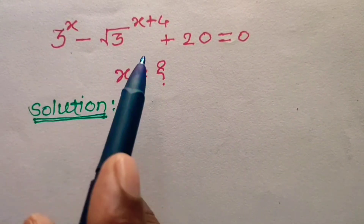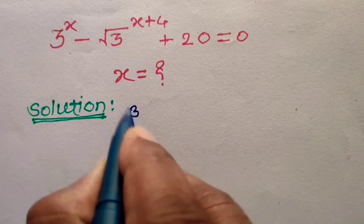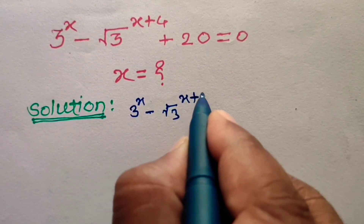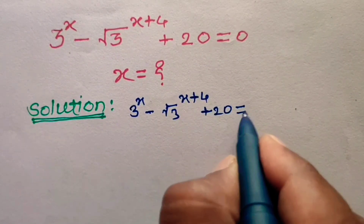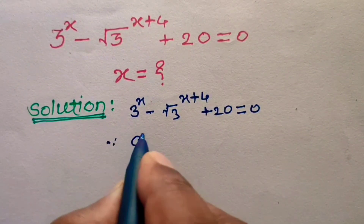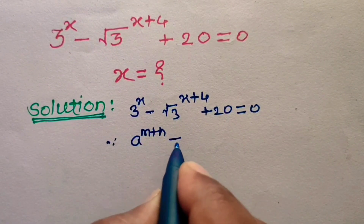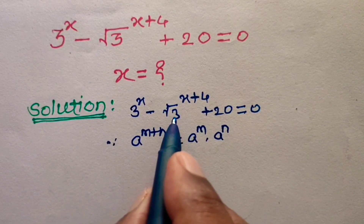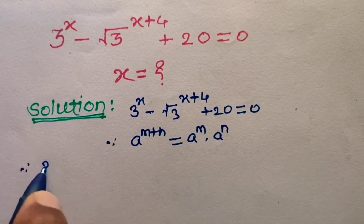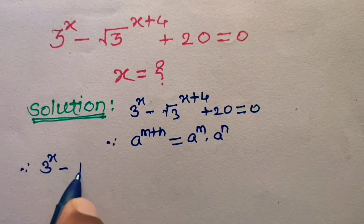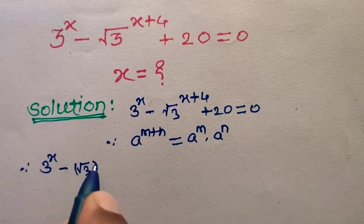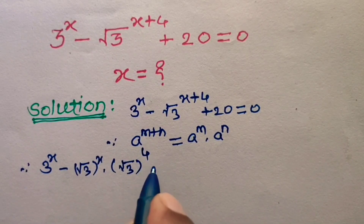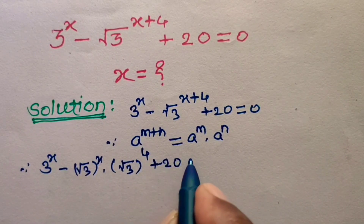First of all, let us write the given equation as it is: 3 to the power x minus square root of 3 to the power x plus 4 plus 20 is equal to 0. We know that a to the power m plus n can be written as a to the power m into a to the power n. Applying this property, the equation becomes 3 to the power x minus square root of 3 to the power x into 3 to the power 4 plus 20 is equal to 0.